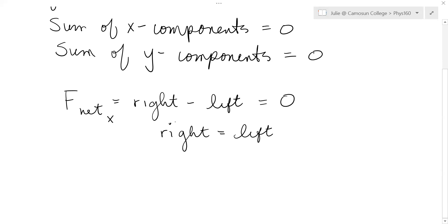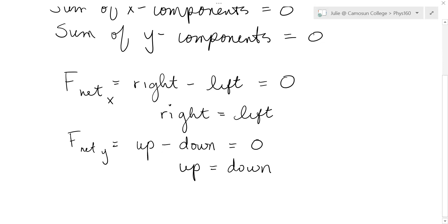Similarly, in the Y direction, because the net force in the Y direction is all the forces up minus all the forces down. If this is in equilibrium, once again, that's zero. And you can say that up equals down, or you can say that the up forces balance the down forces.